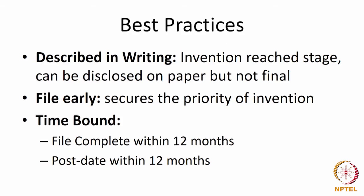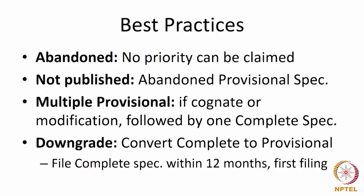It is filed early so that it secures the priority of the invention. The provisional is a time-bound document. If you file a provisional, you have to file a complete within 12 months. You could post-date a provisional, but you would lose priority if you post-date it, which can happen within 12 months.